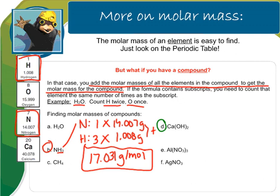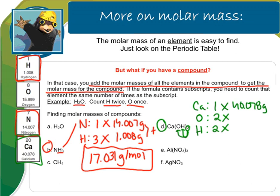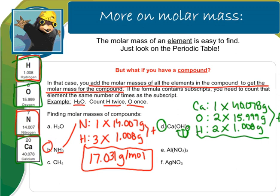Let's try this for calcium hydroxide, which is a little bit harder because we have parentheses. In calcium hydroxide, I have one calcium, two oxygens, and two hydrogens — the subscript 2 is distributed to both the oxygen and the hydrogen. Calcium has a molar mass of 40.078 grams, oxygen has 15.999 grams, and hydrogen has 1.008 grams. You'll get to use a periodic table on your test, which makes this easy. Adding them all together, I get a molar mass of 74.092 grams per mole for the whole compound of calcium hydroxide.